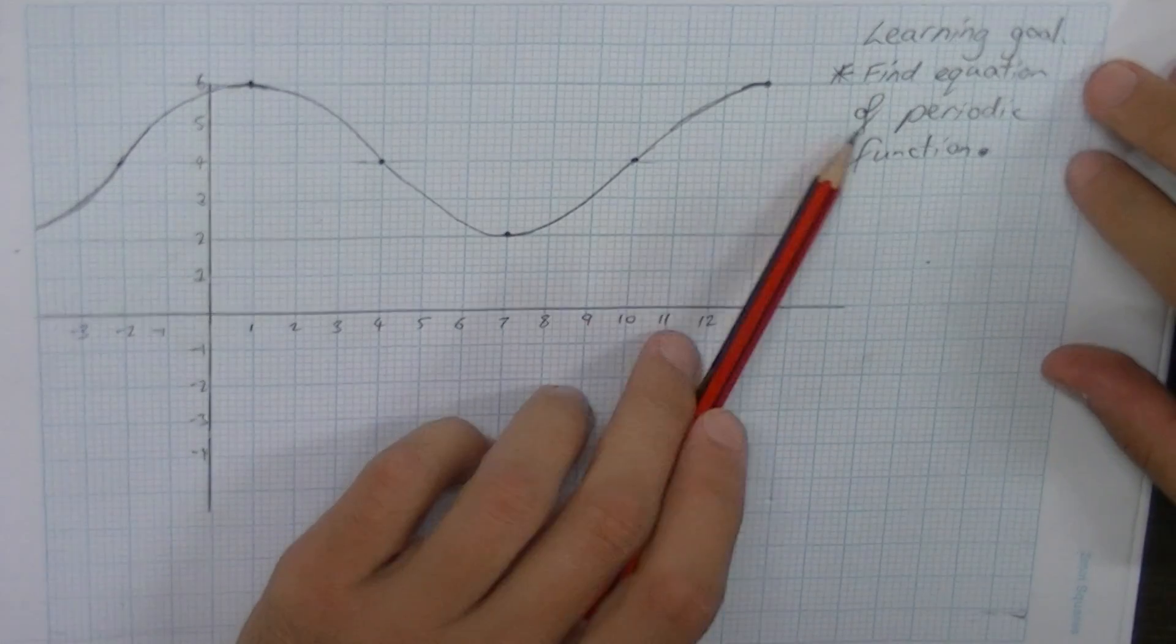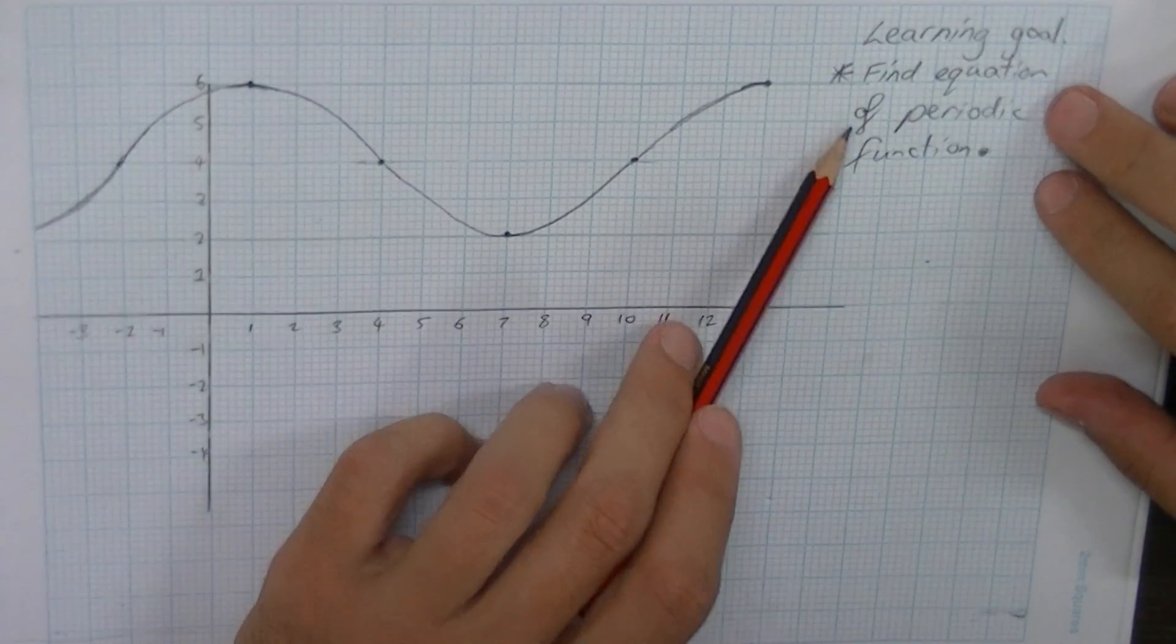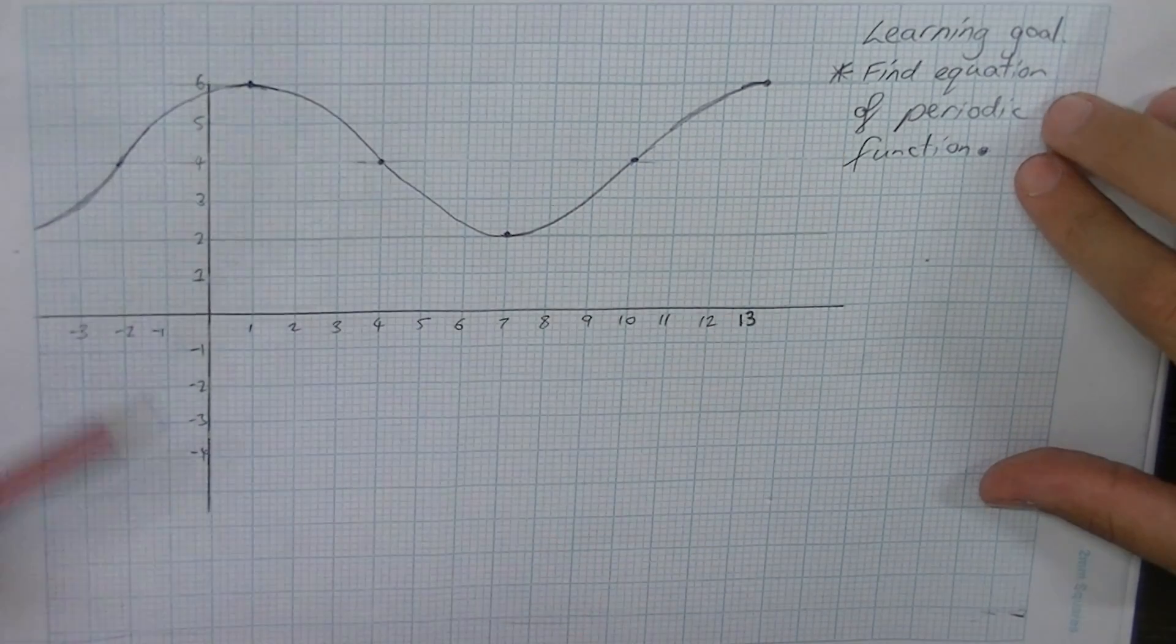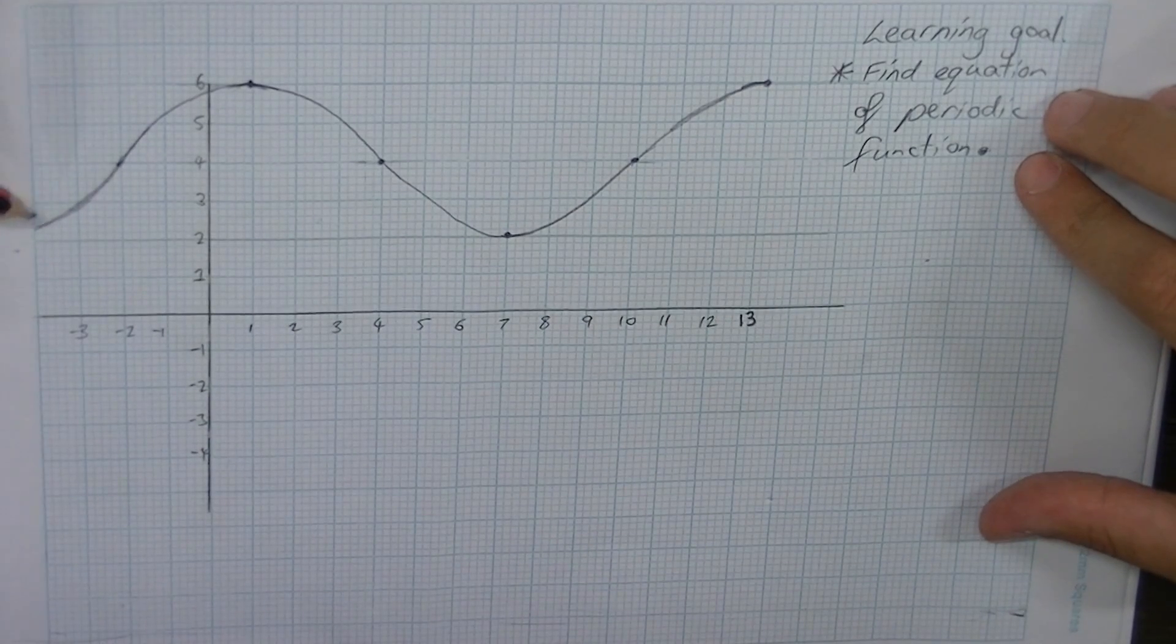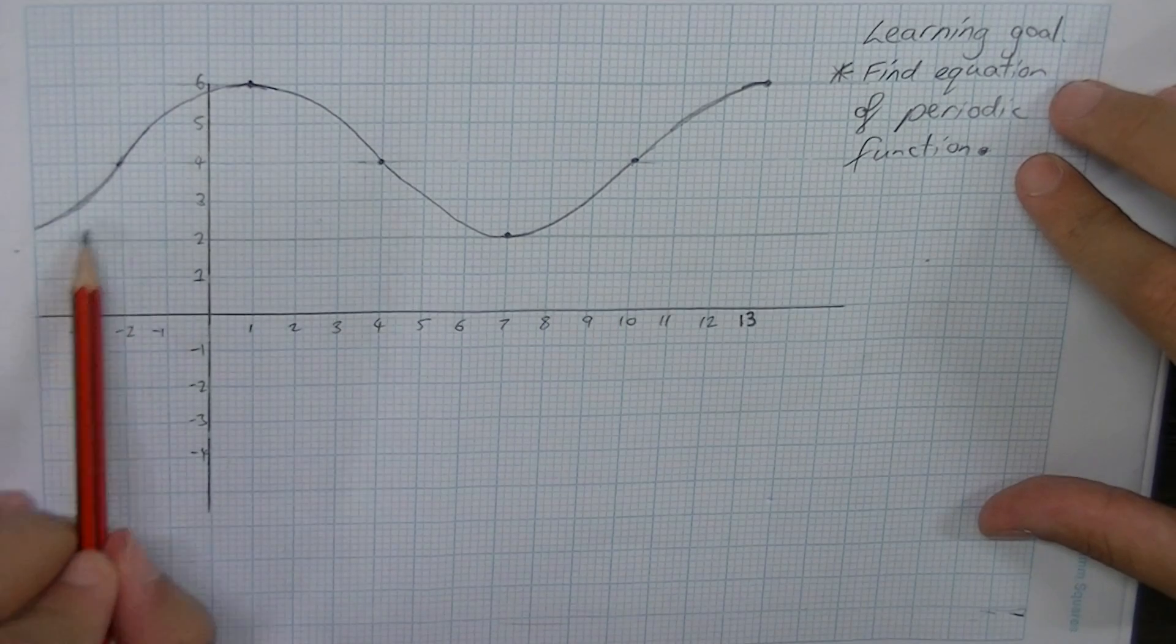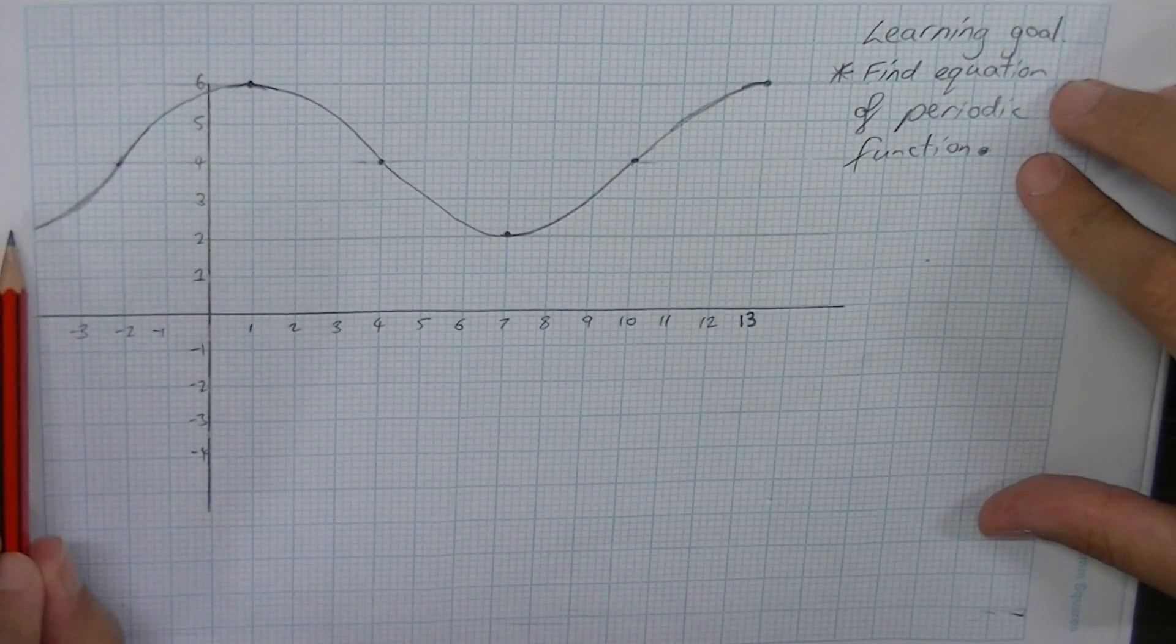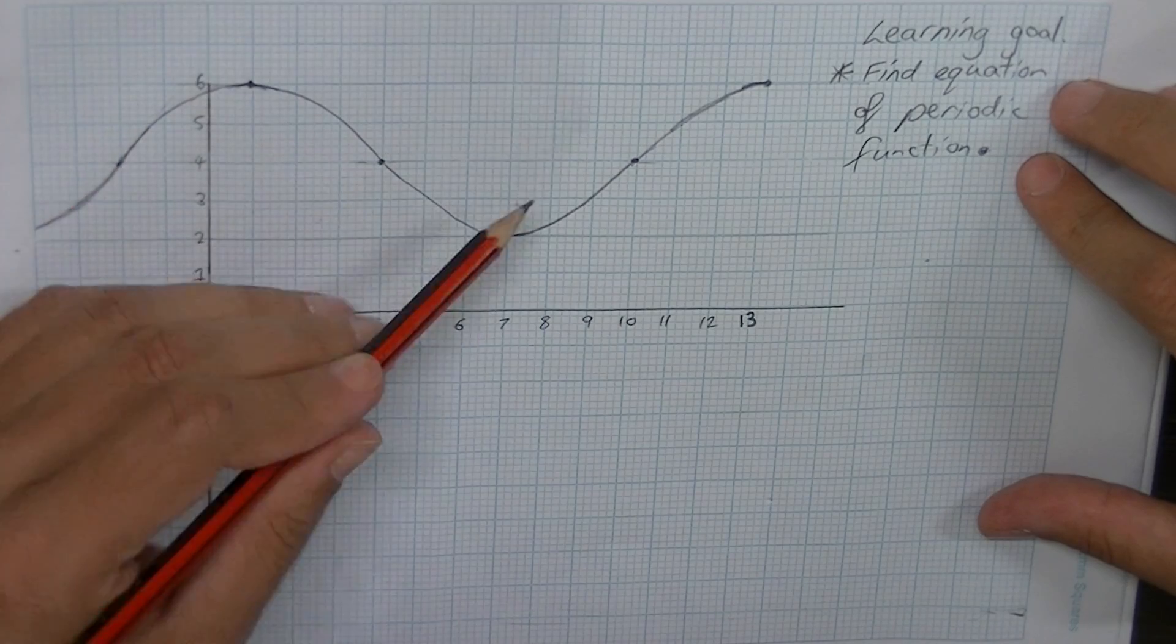Okay, so the learning goal for this video is to find the equation of a periodic function. You should be able to, by the end of this video, look at a graph that looks like this and come up with the equation that produced that graph.